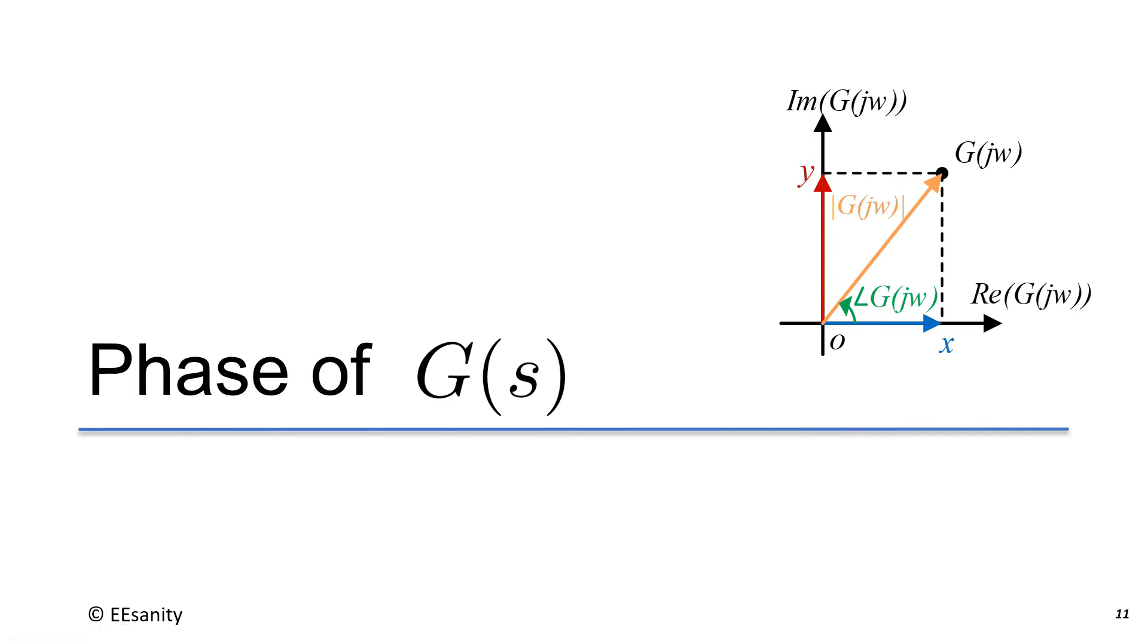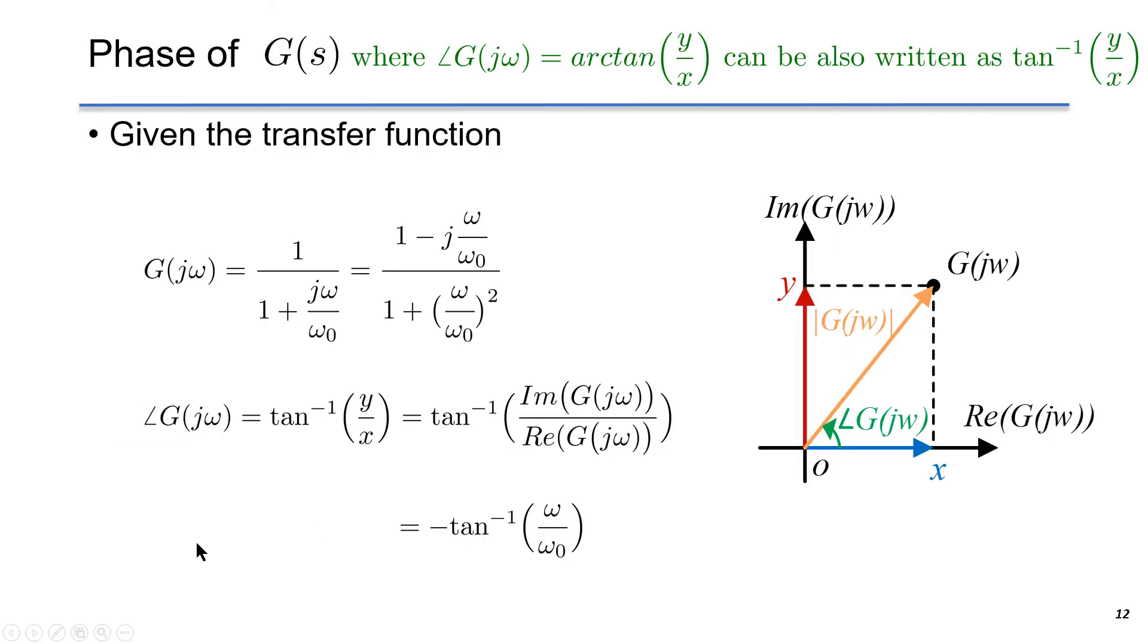We have studied the magnitude of G of S. Now we want to study the phase of the transfer function. The phase will be the angle made with real axis like shown here. In this particular example, we will find the phase as minus arctangent of omega over omega_0.